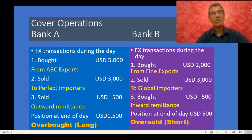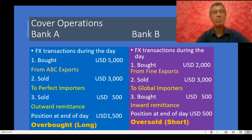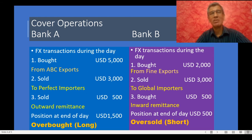Bank A bought US dollars 5,000 from an exporter. At the end of the first transaction, the authorized dealer has an overbought position of 5,000 US dollars. Subsequently it sold 3,000 US dollars to an importer. At the end of the second transaction, the authorized dealer has an overbought position of 2,000 US dollars. Subsequently it sold 500 US dollars to a sender of outward remittance. So at the end of these three transactions, the authorized dealer has an overbought position of 1,500 US dollars.